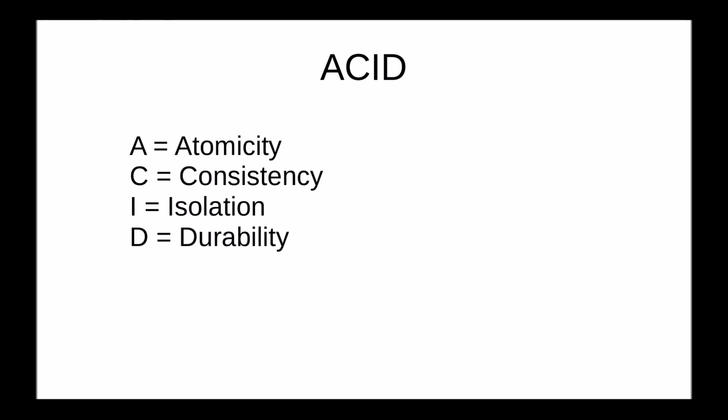Atomicity means what I just mentioned, that all the operations of a transaction are performed as an atomic unit of work, a single unit of work. Consistency means that we have a consistent database state to begin with. When we perform a transaction, we leave the data in a new consistent state.